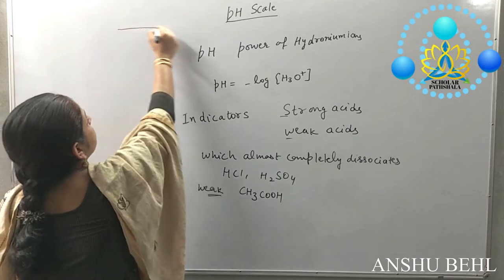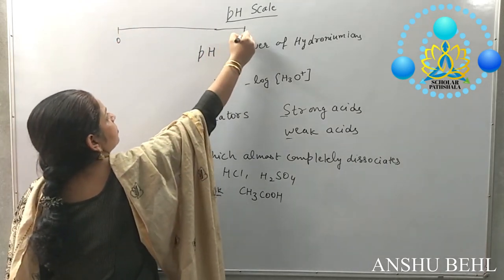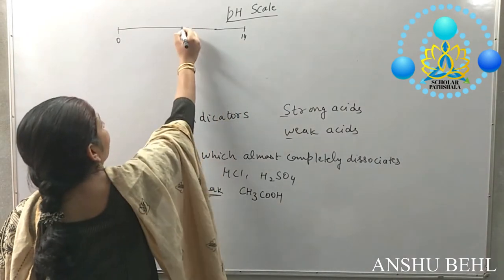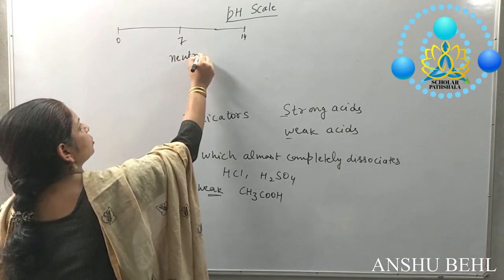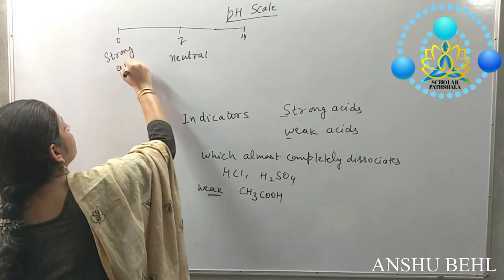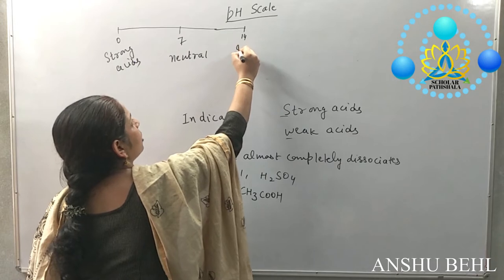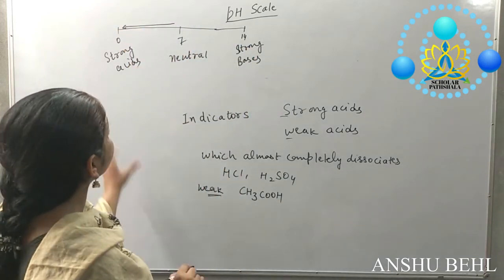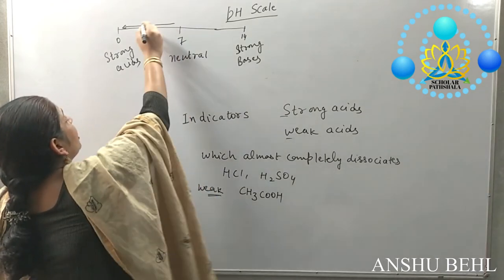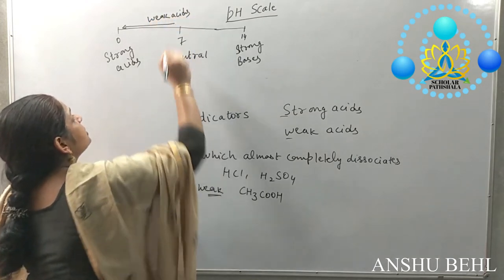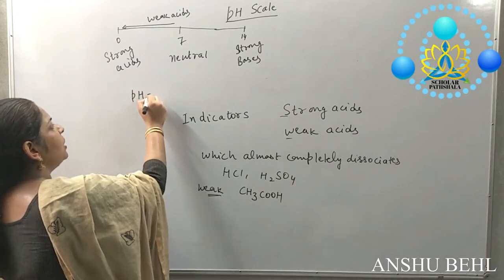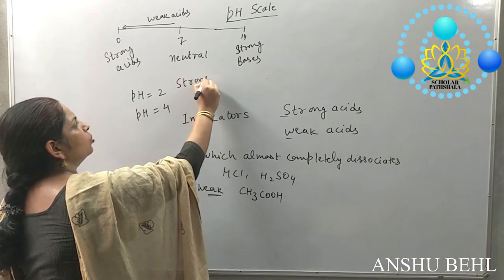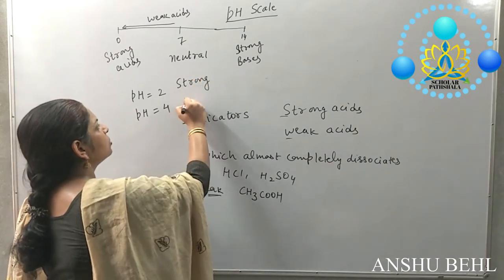The pH scale ranges from 0 to 14. The middle value is 7, which is for neutral solution. 0 is for strong acids and 14 is for strong bases. If you are moving from 7 to 0, you are moving from neutral to the acidic side, and in between you will get weak acids. If you have two substances, one with pH 2 and another with pH 4, the one with pH 2 is the stronger acid and the one with pH 4 is the weaker acid.